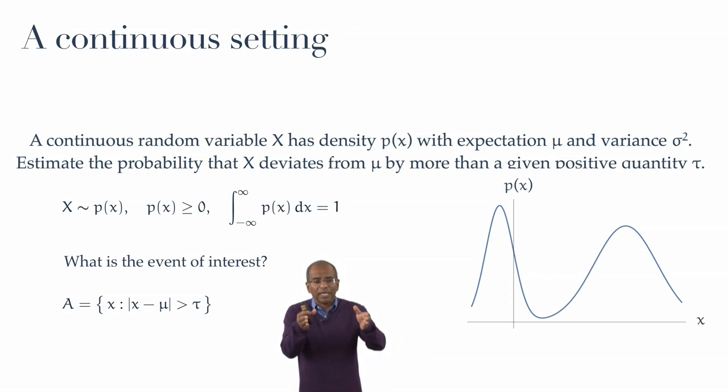So that simple inequality, the absolute value of x minus mu being bigger than tau, describes all values x which fall within the provenance of this particular event. A figure is worth a thousand words, as they say.